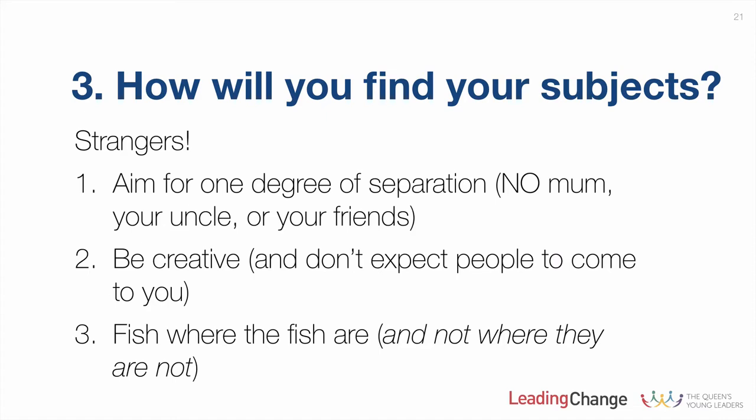The first golden rule is aiming for one degree of separation — no friends, no family. The reason is they will not give you impartial responses because they know you and care about you. You need to find people who are happy to speak candidly and, to put it bluntly, don't care if they hurt your feelings. Getting people to speak to you isn't about haranguing people or knocking on doors — you need to be creative about how you get people to give up a small amount of time to talk. Also, fish where the fish are: think about where the people you need to speak to congregate and go and do your interviewing there.